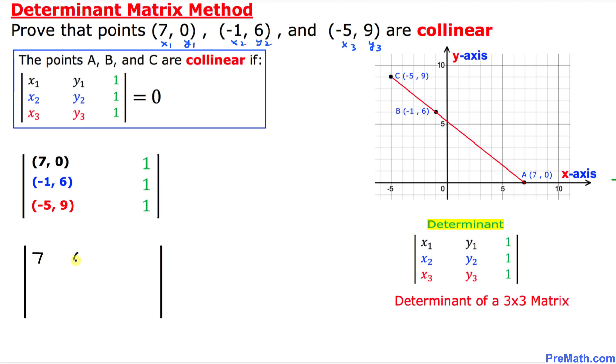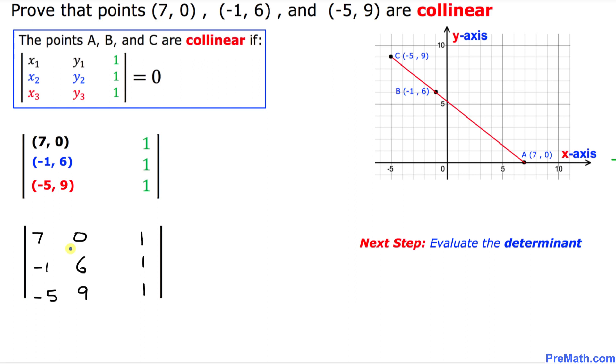I can fill out 7, 0, negative 1, 6, negative 5, and 9. And this column has all entries as 1s.